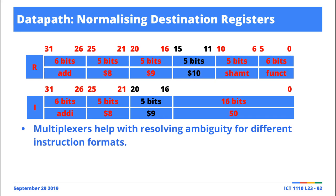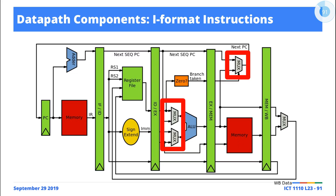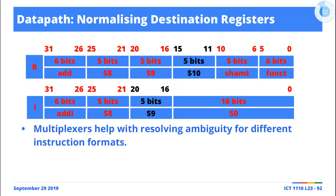For R-format: Opcode, RS, RT, RD, shift amount, function code. But if you're dealing with an I-format instruction like addi, the register component that acts as the destination register is actually RT, the target register. For I-format: Opcode, RS, RT — there's no RD. So the question really is, if you're performing some computation and making reference to the register file, how exactly does the register file get to know which register is the destination? This is the classic example of where multiplexers come in handy — they help resolve those ambiguities.